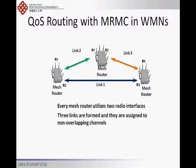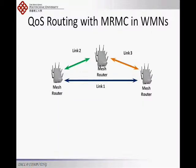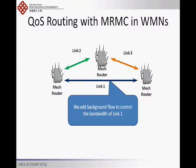There are three mesh routers, and every mesh router utilizes two radio interfaces. Three wireless links are formed and assigned to non-overlapping channels. Then we add background flows to affect the bandwidth of wireless link 1.